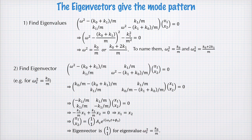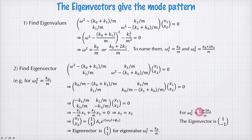If we do the same calculation but substitute in the anti-symmetric frequency instead of the symmetric one, we calculate a different eigenvector for the anti-symmetric mode. This eigenvector shows us that the amplitudes of x1 and x2 are equal but now out of phase, because of the minus sign.